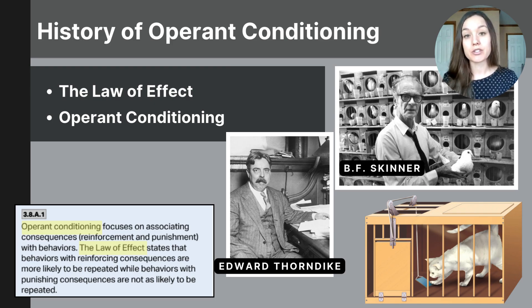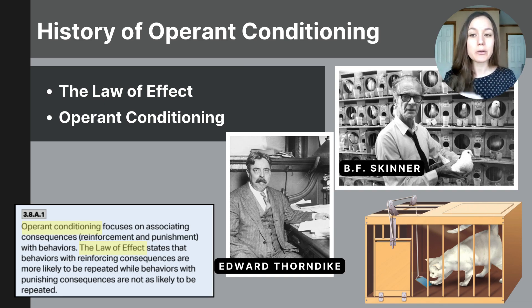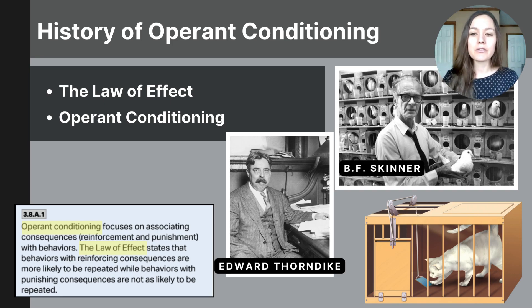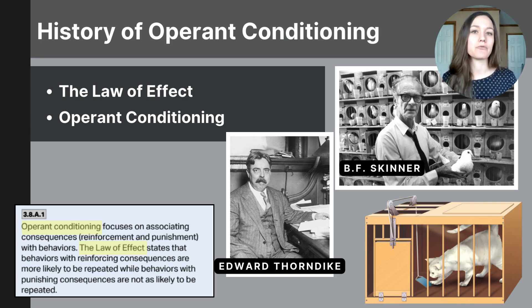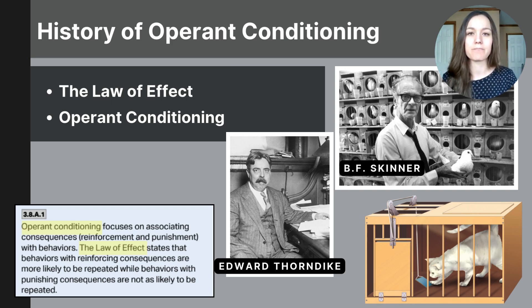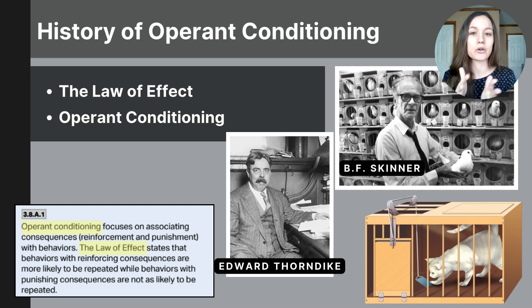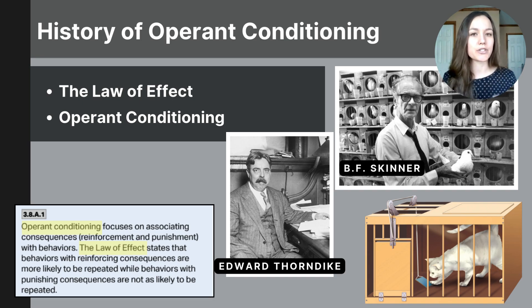This idea was an important starting point for B.F. Skinner, who developed operant conditioning, creating a detailed framework for how behaviors are learned through reinforcement and punishment. While the law of effect explains the general concept of learning through consequences, operant conditioning provides specific terms like positive reinforcement, negative reinforcement, positive punishment, negative punishment, and schedules of reinforcement. He also used controlled experiments to study how these consequences shape behavior. The law of effect was the foundation, and operant conditioning is a more detailed way to understand how voluntary behaviors are shaped by consequences.